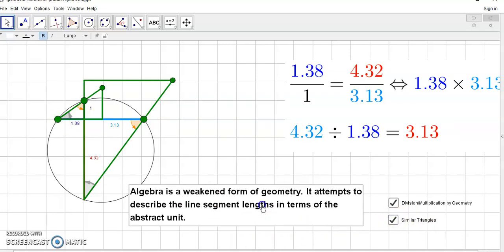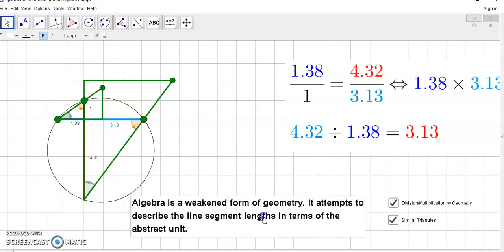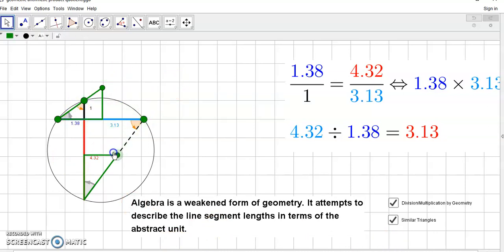Algebra, again, is a weakened form of geometry. It attempts to describe these line segment lengths in terms of the abstract unit. And as you see, any similar triangle would work. It doesn't have to be the particular triangle that you're using here. And normally, when you see similar triangles, you don't see them in a circle, but that's how they were realized within a circle. Everything that you know, trigonometry, algebra, comes from a circle, which is the third requirement of Euclid's five requirements, not the bullshit that you hear of axioms and postulates. There are no axioms or postulates in mathematics.